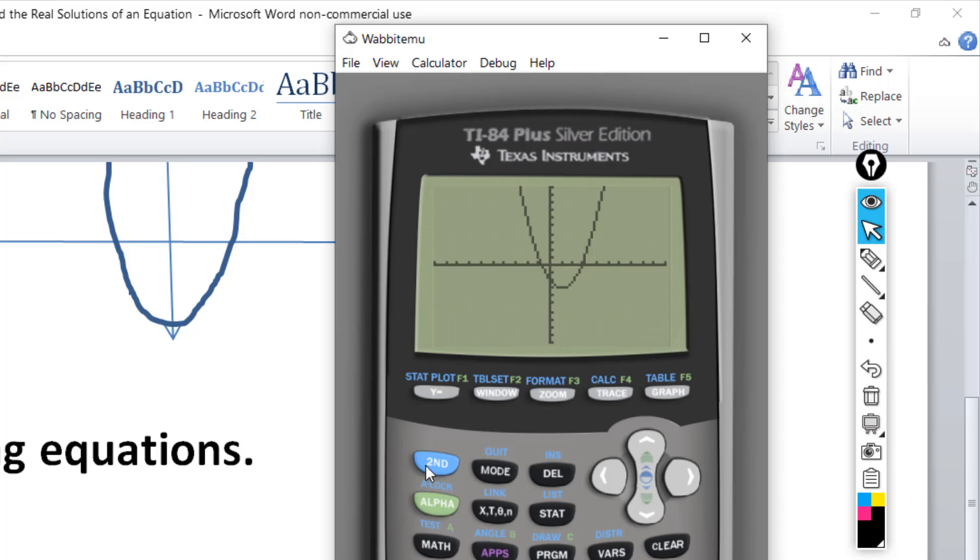So what do we do in this case? I hit the second key, and then I hit the trace key here. I'm accessing the calculate menu. And then number 2 is zero, so I enter 2 here, or hit the 2 key. And then you see the cursor, it wants a left bound. So let's move this to the left a little bit. So we're going to find the value or the zero on the left side, which will correspond, of course, to an x-intercept.